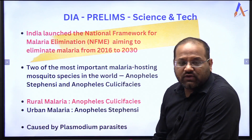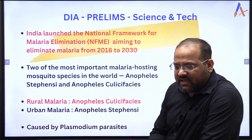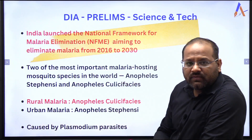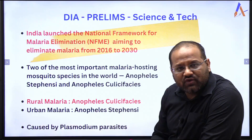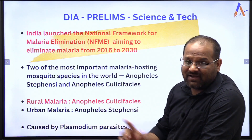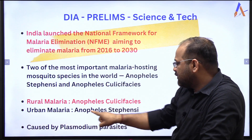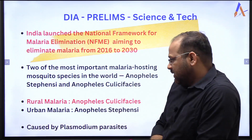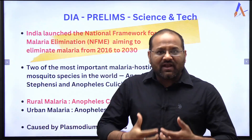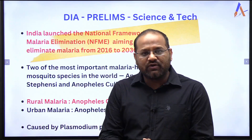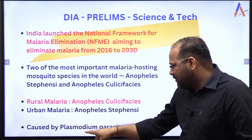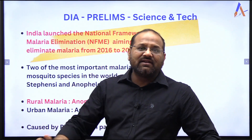Two of the most important malaria-hosting mosquito species in the world are Anopheles stephensi and Anopheles culicifacies. Rural malaria is caused by Anopheles culicifacies, but urban malaria is caused by the vector Anopheles stephensi. This distinction is important. The actual disease is caused by plasmodium parasites — the mosquito is the vector, but plasmodium is the pathogen responsible.